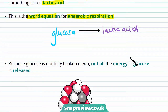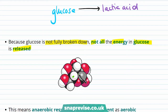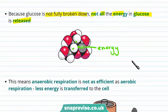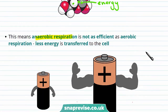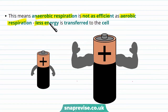We've talked about the fact that glucose is not fully broken down, and this means that not all of the energy in glucose is released. Some of the energy can't be transferred to the cell. This means that anaerobic respiration is actually not as efficient as aerobic respiration, because less energy is transferred to the cell.